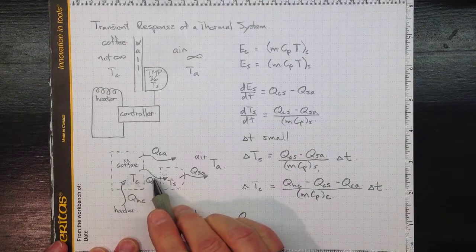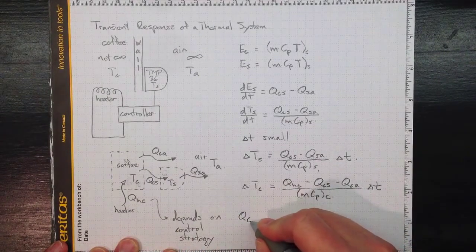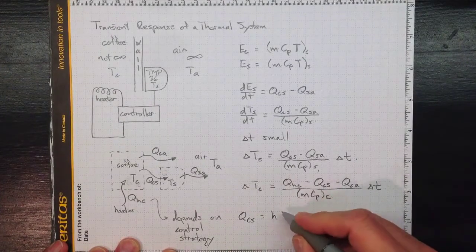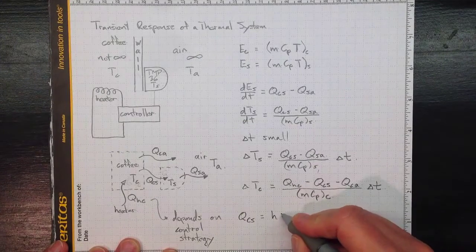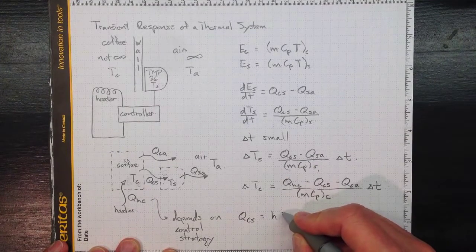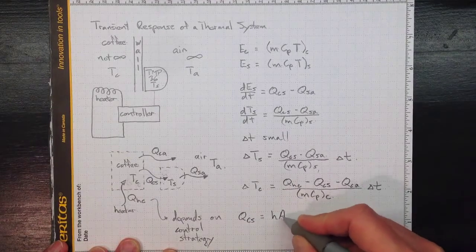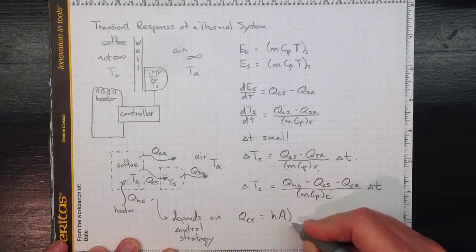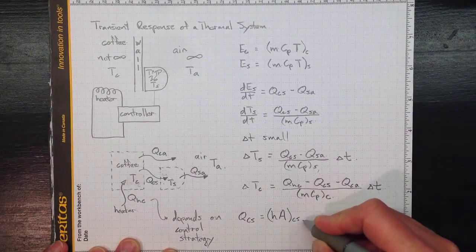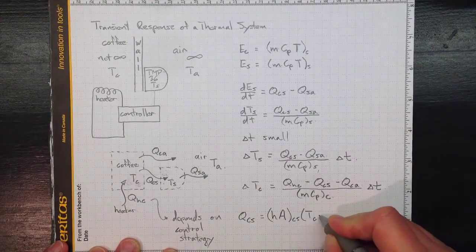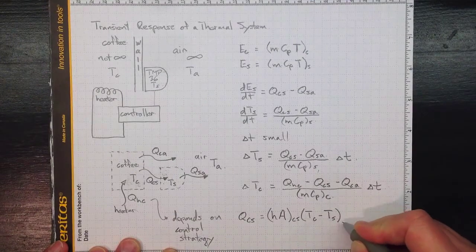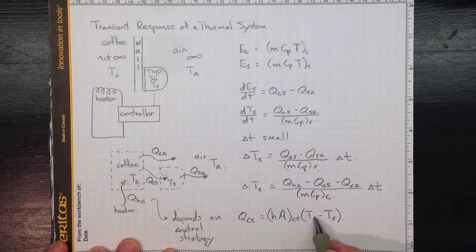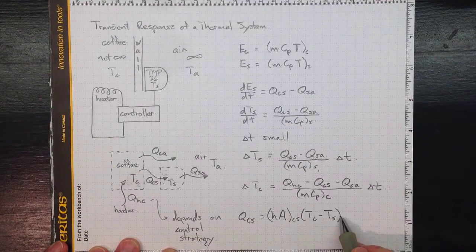Q from the coffee to the sensor. Well, we know from before that that's going to depend on a heat transfer coefficient, that we really need to figure out more about heat transfer to know what it is, but it'll be something, some value. The area, how large this area is where those two interact between the coffee and the sensor, times T coffee minus T sensor. And we know that this and the mass and specific heat are going to be related to the time constant that we see. So we should be able to pull that out.